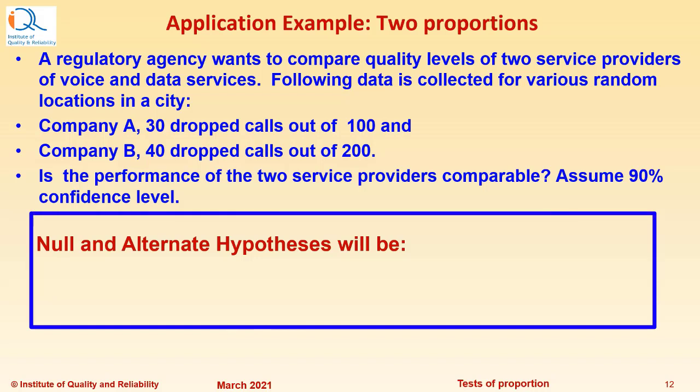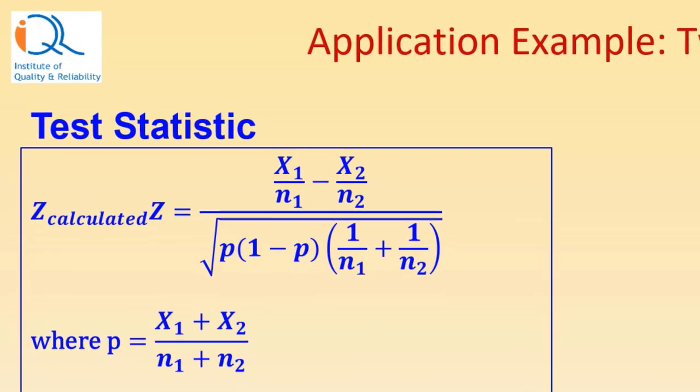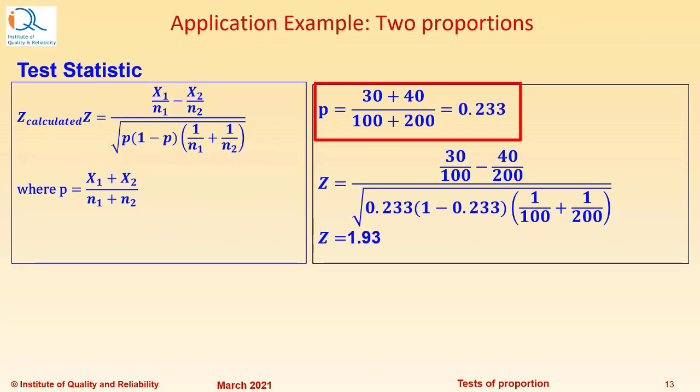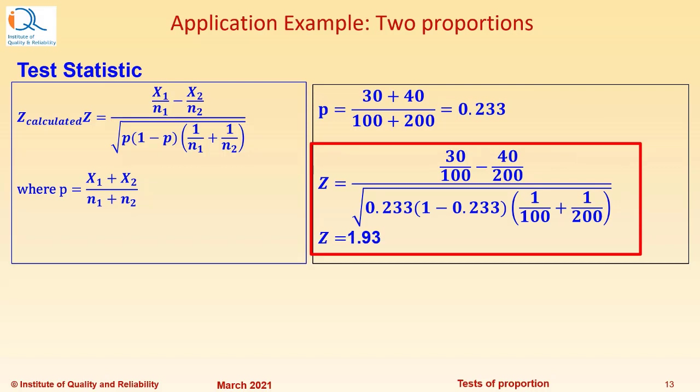Null and alternate hypothesis will be H0: proportion A equals proportion B and H1: proportion A not equal to proportion B. We can calculate the Z statistic using the formula shown earlier. The proportion p would be equal to 30 plus 40 by 100 plus 200, that is 0.233. This is the expected proportion if null hypothesis is true. Now Z can be calculated as 30 by 100 minus 40 by 200 divided by square root of 0.233 times 1 minus 0.233 times bracket 1 upon 100 plus 1 upon 200. This works out to Z equals 1.93.